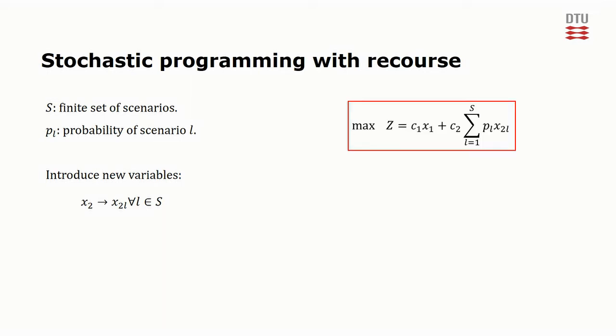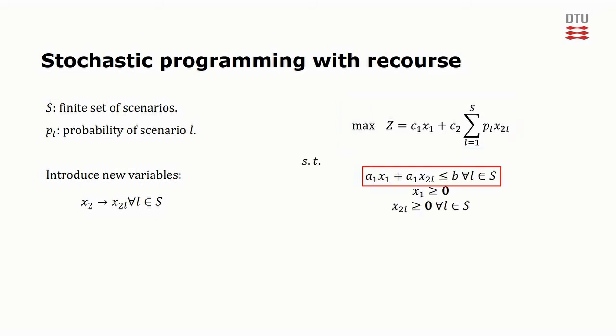The objective of the stochastic program with recourse becomes an average across all of these S scenarios. For each of the scenarios, we need a version of the constraints from the original problem, using the appropriate version of the stage 2 variables.